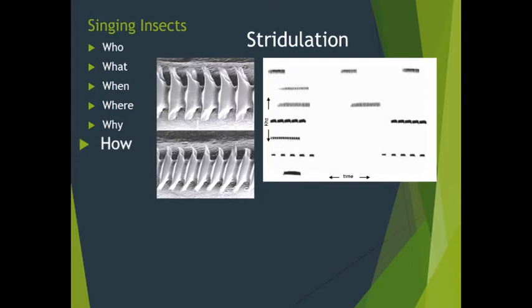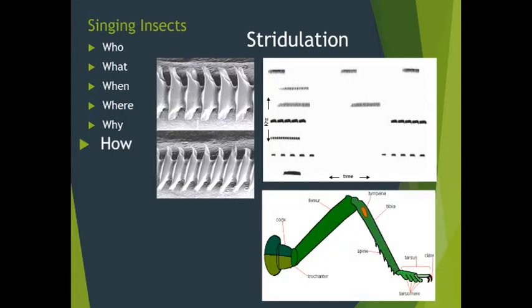These three families sing from their backs, and perhaps fittingly, their ears are on their knees. A thin membrane on the upper tibia called the tympanum covers the opening of an air-filled passageway that extends up the leg and connects to the acoustic spiracle in the thorax, which opens to the air. As a result, the tympanum flexes in response to pressure waves from either side, providing good directional hearing. Tympanums are found on both males and females, as both respond to the calls of singing males.